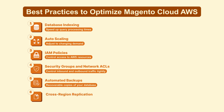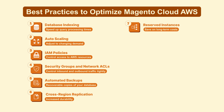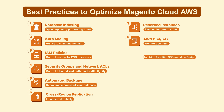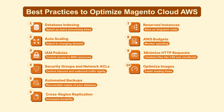Replicate critical data across multiple AWS regions for increased durability. Purchase reserved instances to save on long-term costs. Set budgets and alerts to monitor spending. Combine files like CSS and JavaScript to reduce HTTP requests. Compress images to reduce size without losing quality for faster loading times. Keep your Magento application and AWS services up-to-date with security patches and updates.